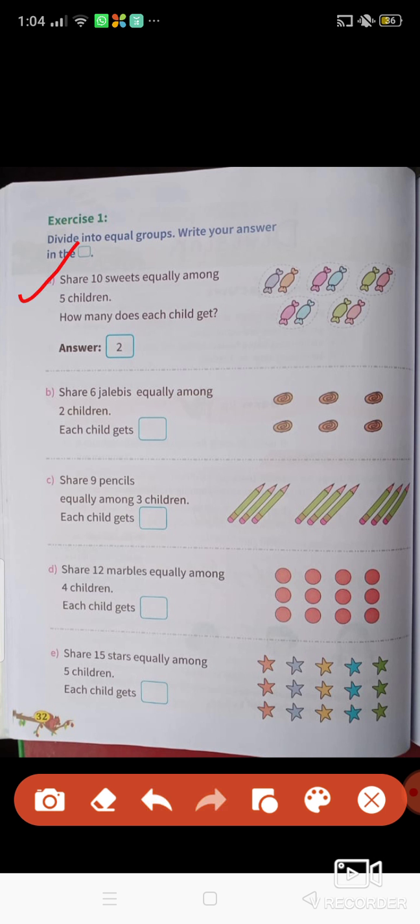So question 1 is given, share 10 sweets equally among 5 children, how many does each child get? So this means that 10 chocolates are, you can see here, 1, 2, 3, 4, 5, 6, 7, 8, 9, 10. 10 chocolates for 5 children, how many will each child get? So we need to divide, 10 divided by 5. 10 divided by 5 is equal to how much? 5 2's are 10, we know. So that's why the answer is 2, because 1 child will get 2 chocolates.